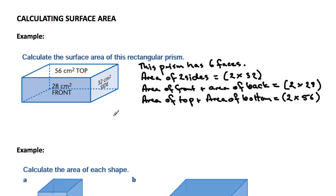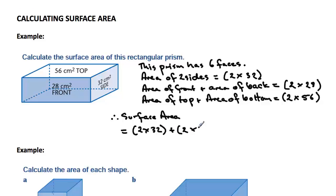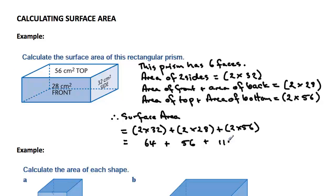Now our total surface area: the surface area is equal to two lots of 32 plus two lots of 28 plus two lots of 56. Working these out one at a time — two 32s are 64, doubling 28 we get 56, and doubling 56 we get 112 — which gives us a total of 232 centimetres squared. We just very systematically look at each part of the shape, work out the areas, and then combine them.